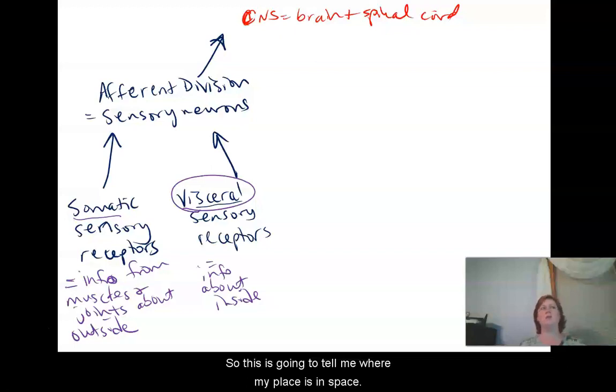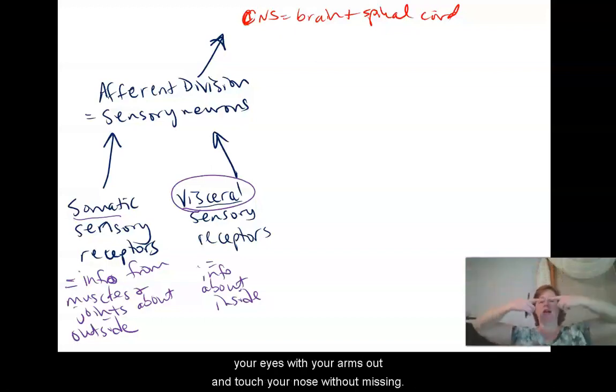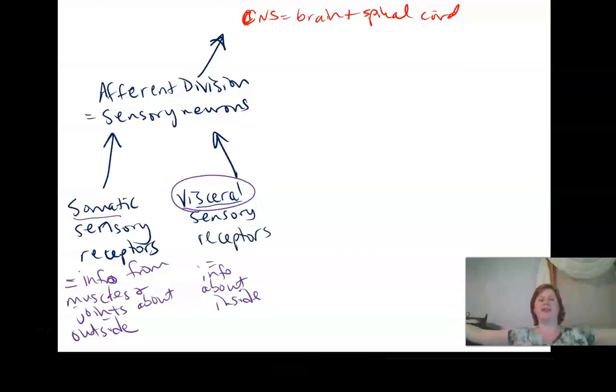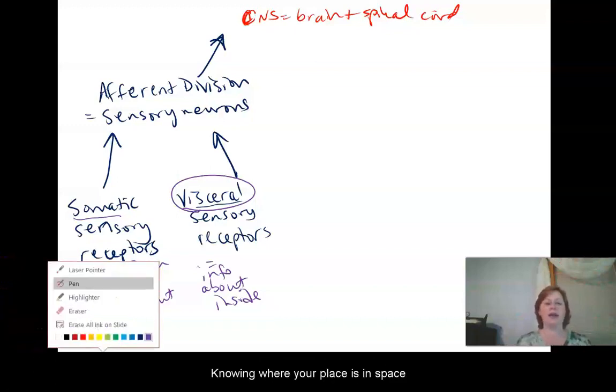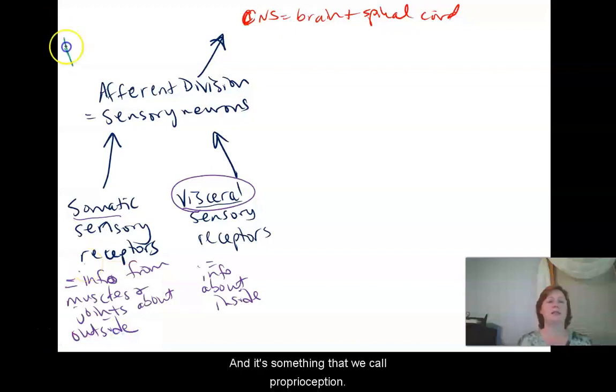So this is going to tell me where my place is in space, whether my feet are touching the floor or I'm laying on the floor, or I'm closing my eyes and I'm able to touch my nose. So the reason that you're able to stand there and close your eyes and put your arms out and touch your nose without missing is because I'm getting information from my muscles and joints of my hand, my elbow, my shoulder, that are all telling me where those different body parts are. Knowing where your place is in space is very important, and it's something that we call proprioception.